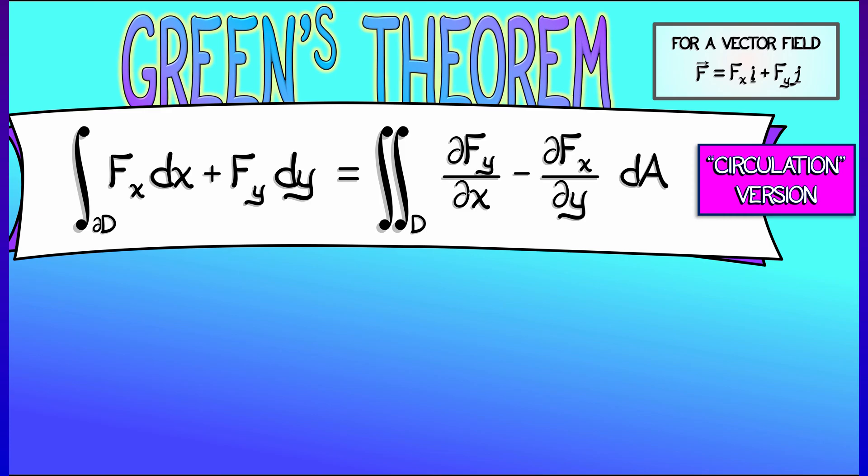What is that? Using the standard form of Green's Theorem and using this work one-form, we get partial fy partial x minus partial fx partial y. Check it. Make sure that that's true. We were using p and q notation. Now we're using fx and fy, the work one-form.